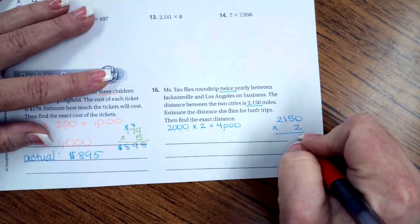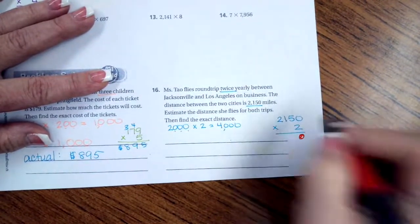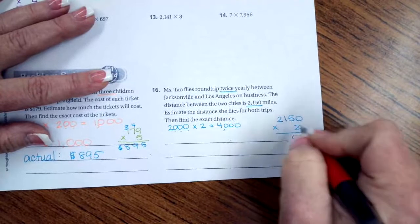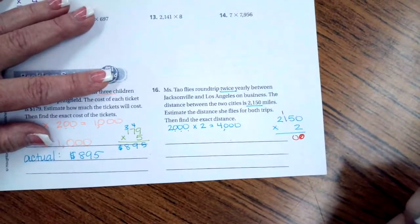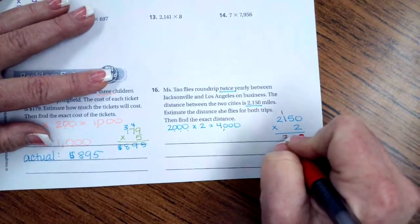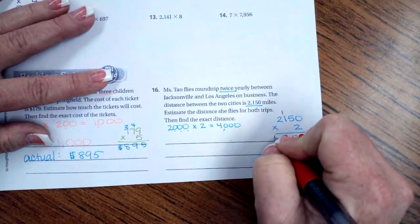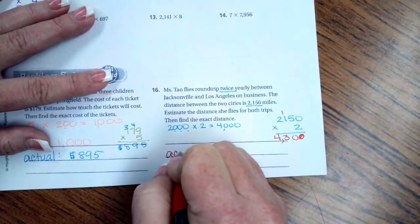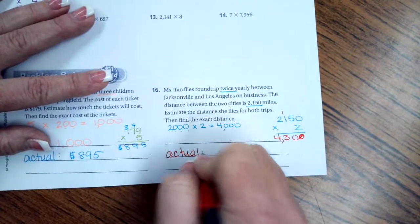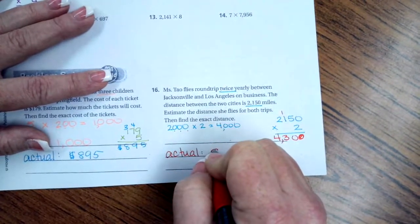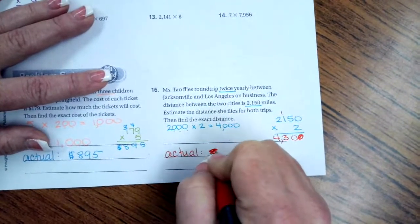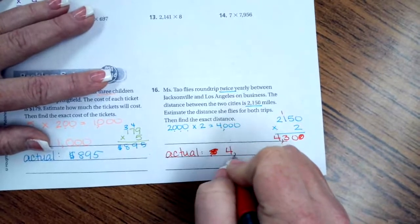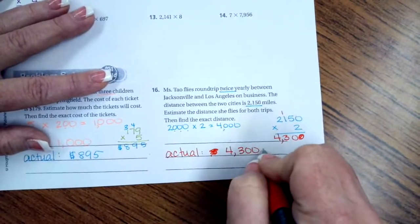Now we're going to go ahead and do the real math. So two times zero is zero, not two like I almost wrote. Two times five is ten, I'm going to carry that one. Two times one is two plus one is three. And two times two is four. So actual is - not a dollar sign, sorry guys - four thousand three hundred miles.